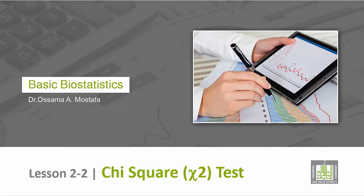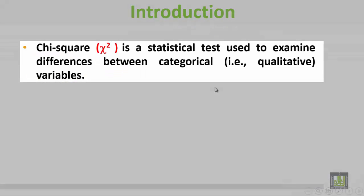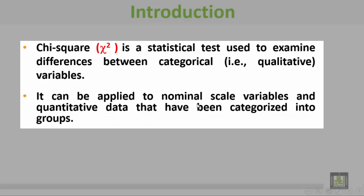Lesson two: the chi-square test. The chi-square test is a statistical test used to examine differences between categorical, that's to say qualitative, variables. It can be applied to nominal scale variables and quantitative data that have been categorized into groups.